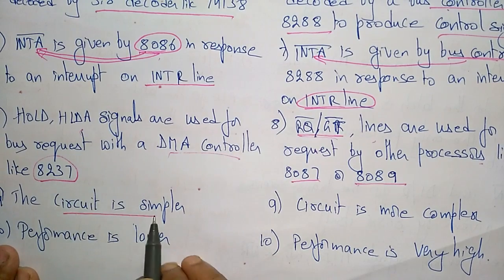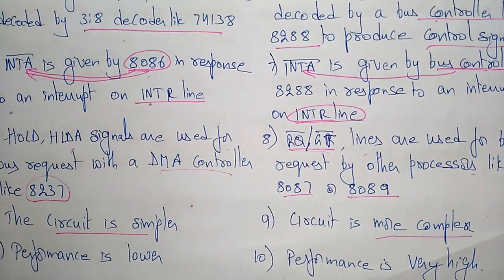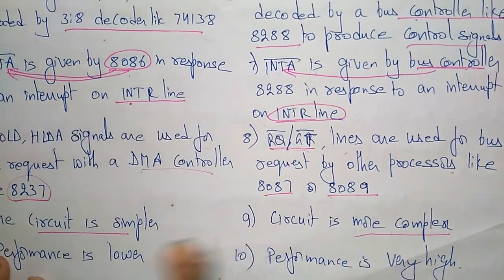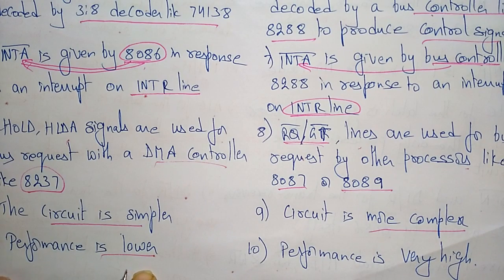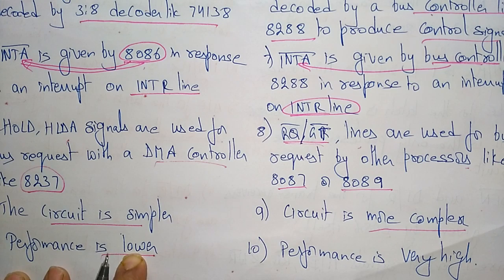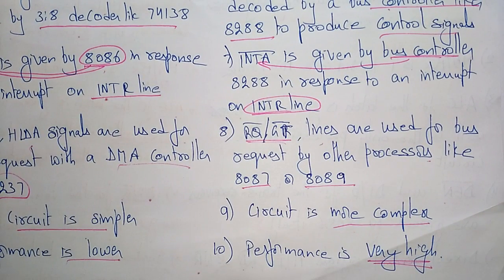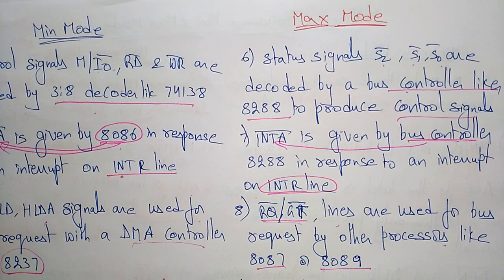In minimum mode the circuit is simpler, whereas in maximum mode the circuit is more complex because many processors are added to control operations. In minimum mode performance is slower because the 8086 has to perform all operations itself. In maximum mode performance is very high because different devices help the processor manage, transfer, and write data — every operation is handled by different processors, making maximum mode significantly faster than minimum mode.